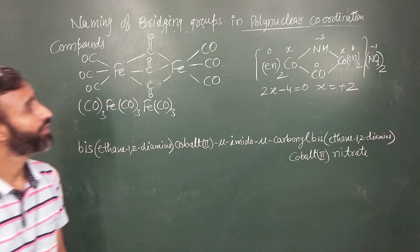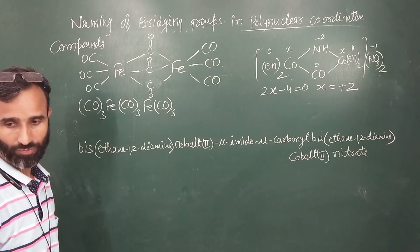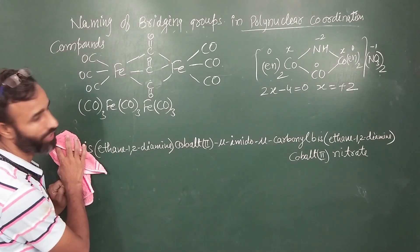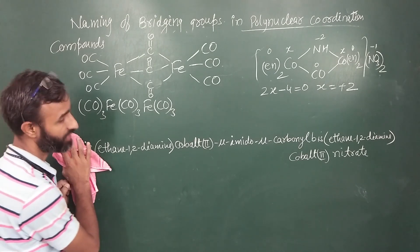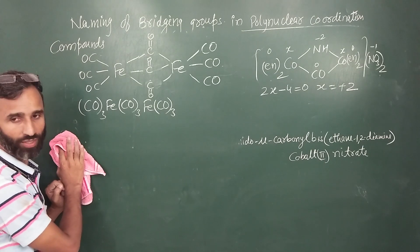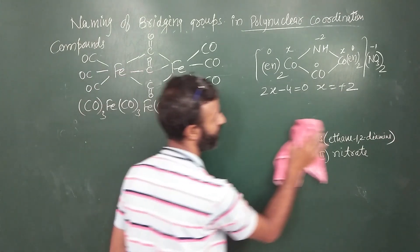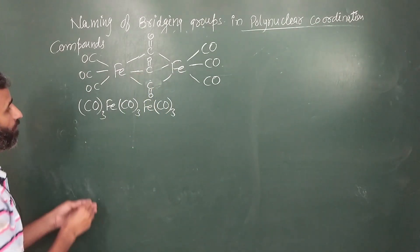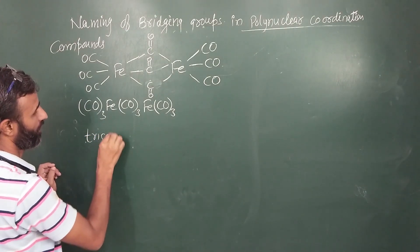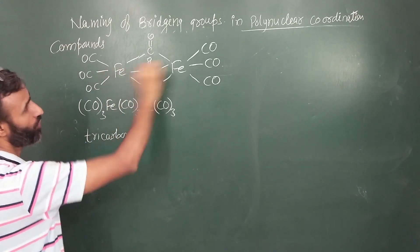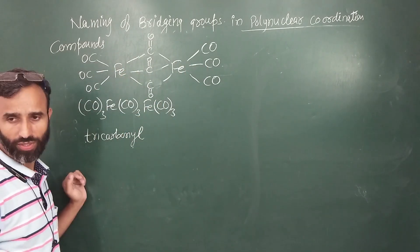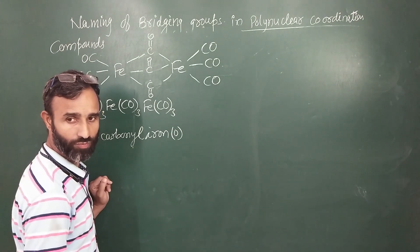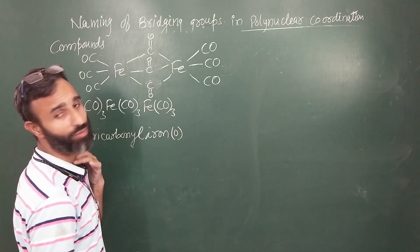Having bridging ligands and their names. Carbonyl CO is neutral, so overall oxidation number is zero. Tricarbonyl iron(0) — iron — neutral complex.